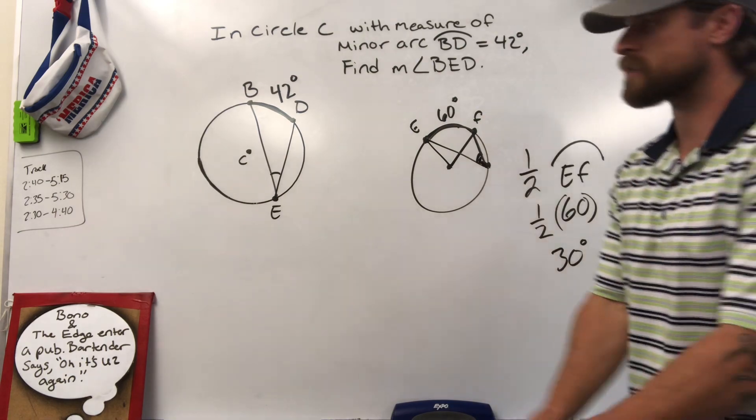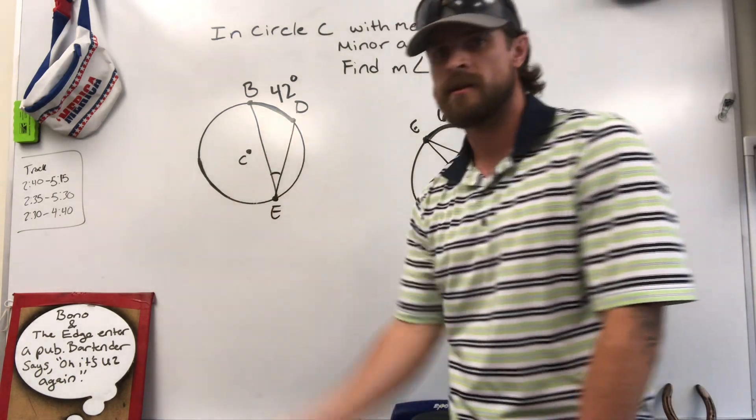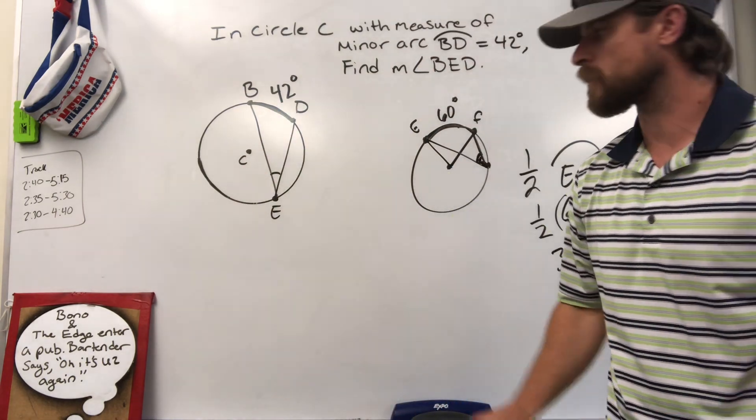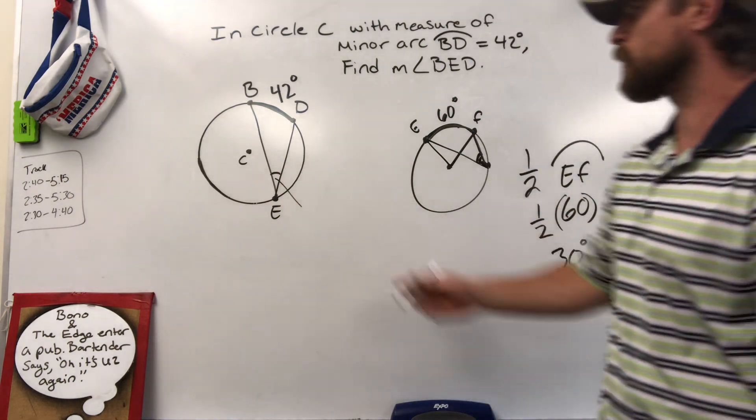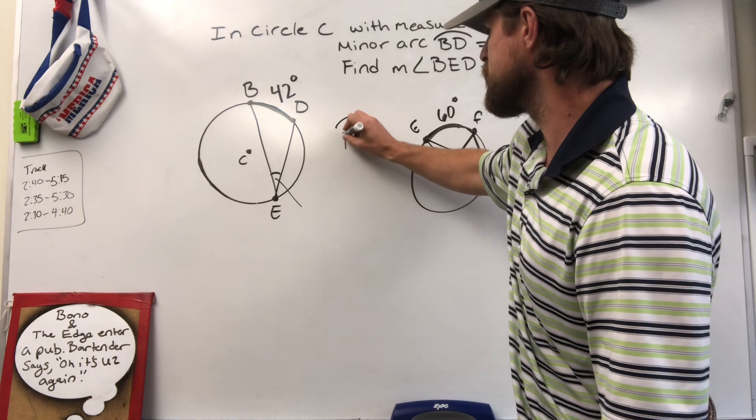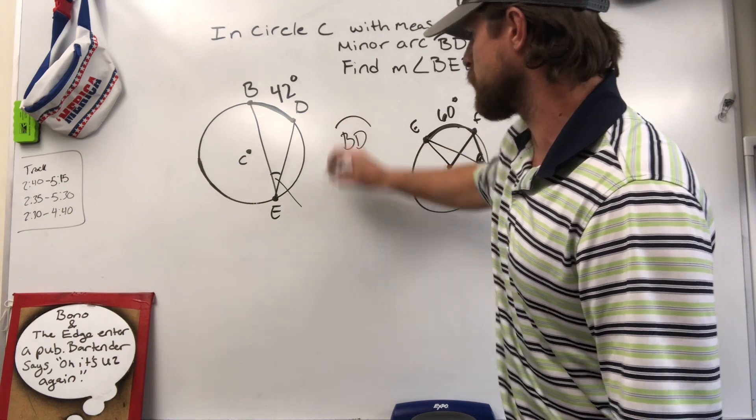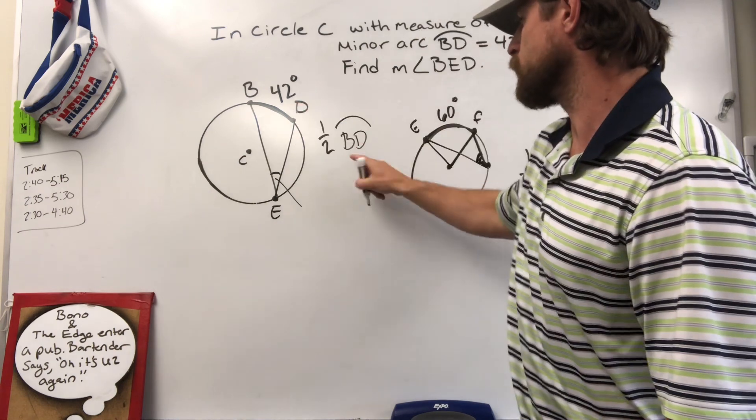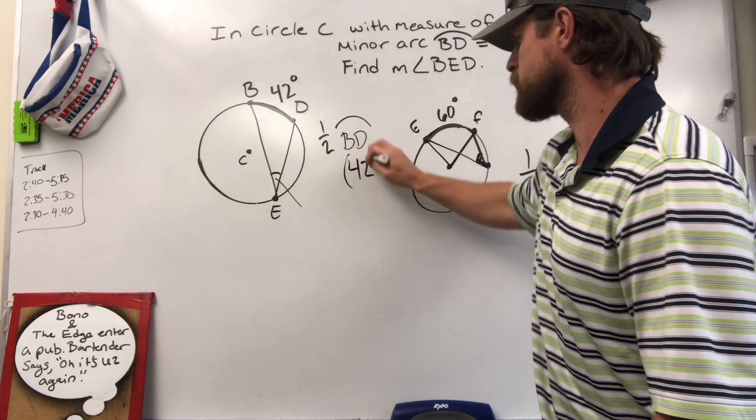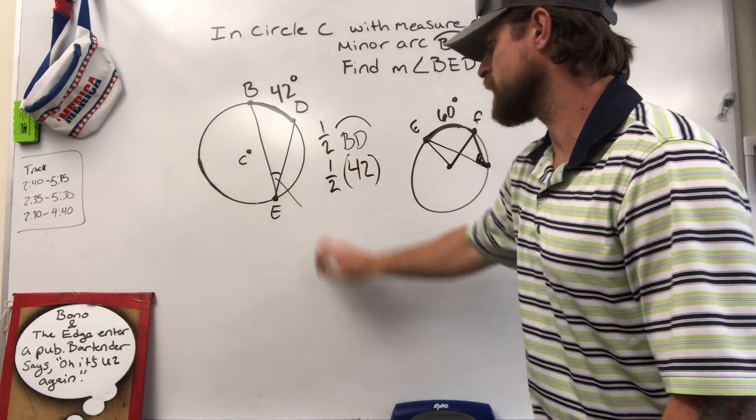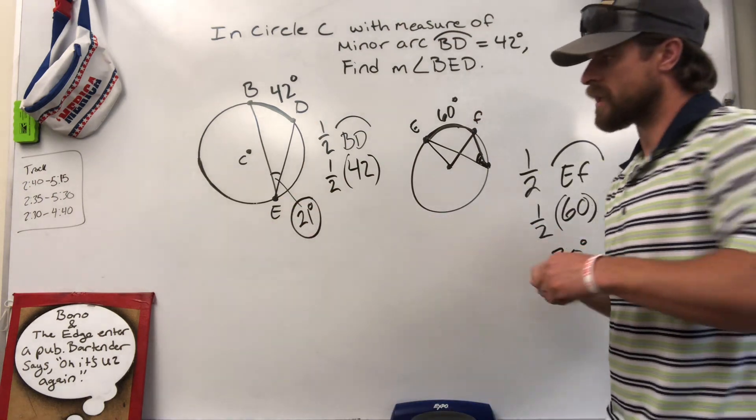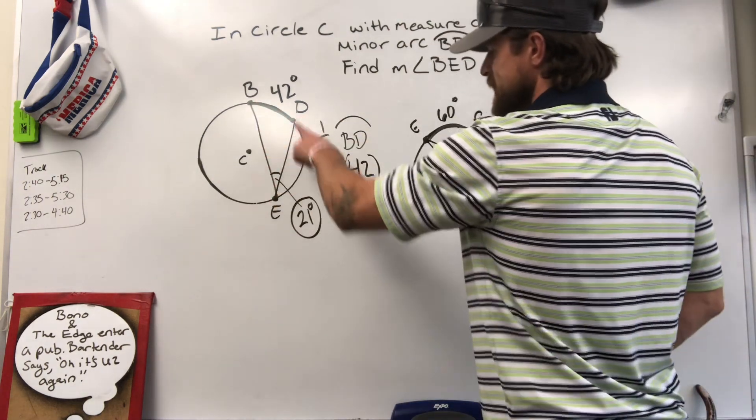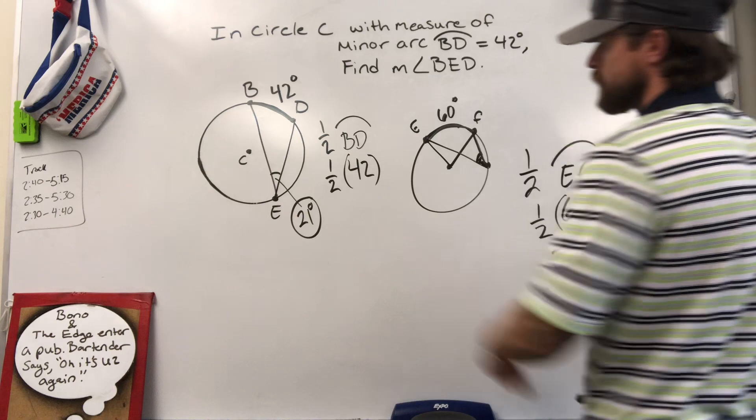So we go over here and they're telling us our minor arc is 42 degrees. You probably already know what I'm looking for. I'm looking for this angle measure, which is cut in half. So what's half of BD's arc measure? 42 times one half gives me 21 degrees. The inscribed angle BED has a measure of 21 degrees.